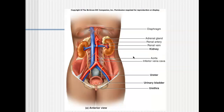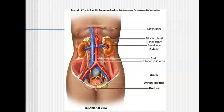This is more of the anterior view. You can see the kidneys, the ureters coming in. The ureter feeds in from the posterior side of the urinary bladder, and then the urethra in the female.